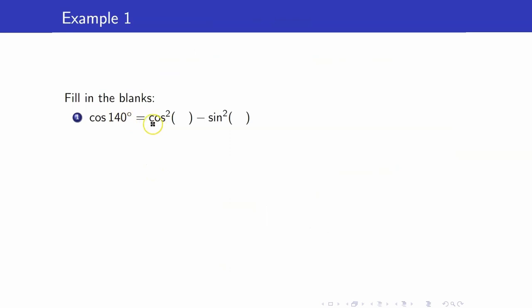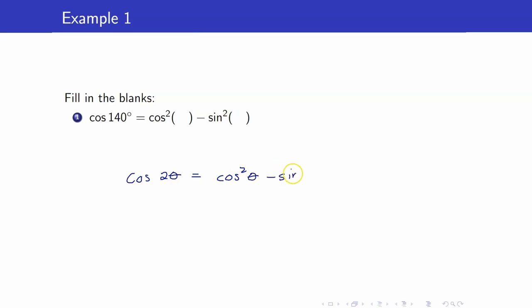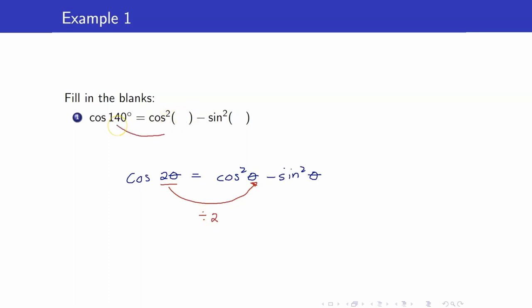Let us have some examples. Cosine of 140 degrees is equal to what? Notice the angle here — from 2 theta it became theta, so it was divided by 2. Therefore, from 140 degrees, if you want to express it using this formula, theta will become 70 degrees.